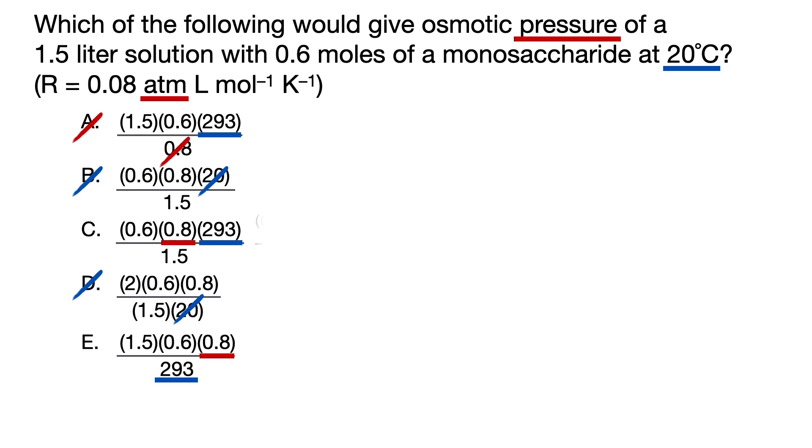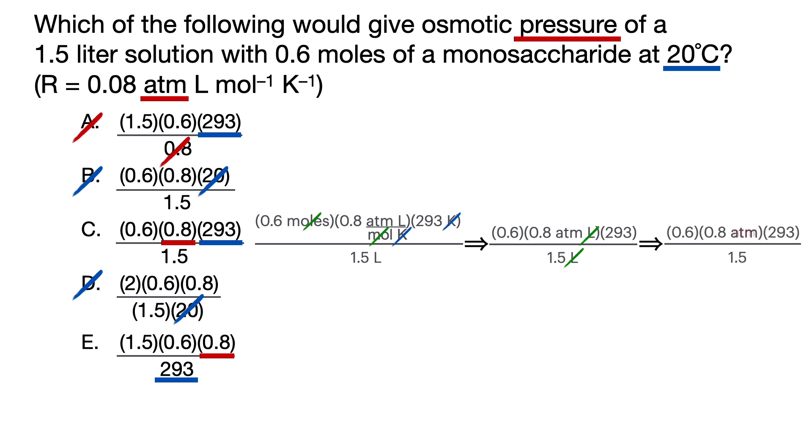And this is what answer choice C looks like with all of its units. You see that the moles are on top of each other and they cancel out. The Kelvin are on top of each other and cancel out. And then we're left with this, where the liters are now on top of each other and cancel each other out. And finally, the only unit left is atm, which is what we want, giving us answer choice C.